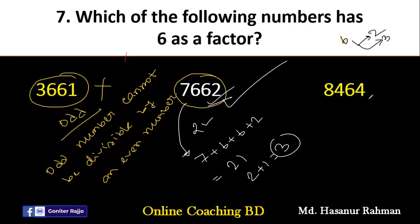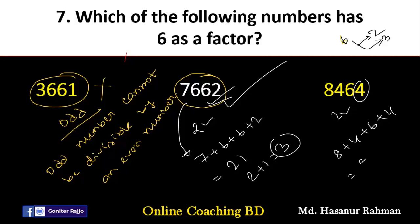Now look at 8464. Yes, this is an even number, so it is divisible by 2. Now let me check if it is divisible by 3. We add 8 plus 4 plus 6 plus 4: 6 plus 4 is 10, 10 plus 4 is 14, 14 plus 8 is 22. Adding 2 plus 2 gives 4. No, 4 cannot be divided by 3. So 8464 will not be divisible by 6.